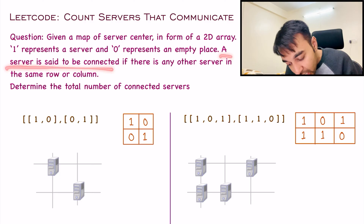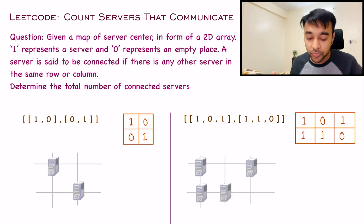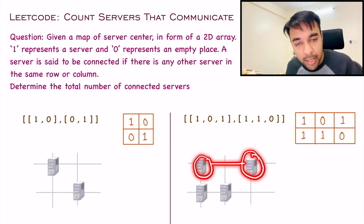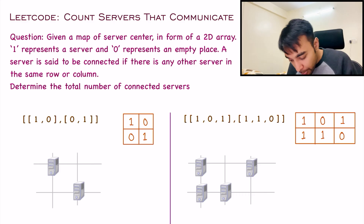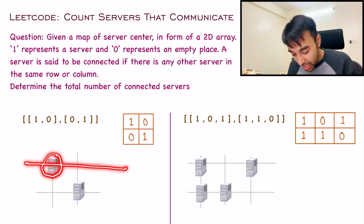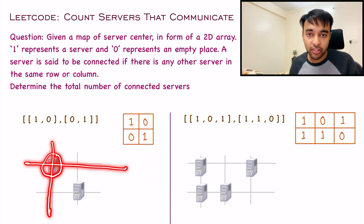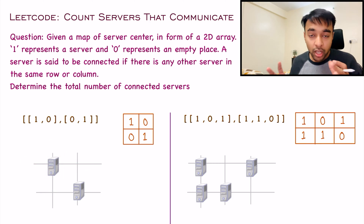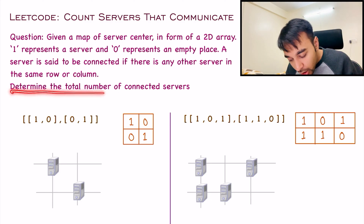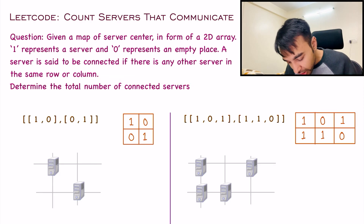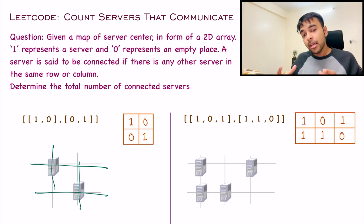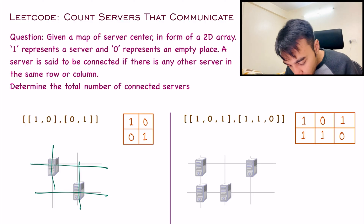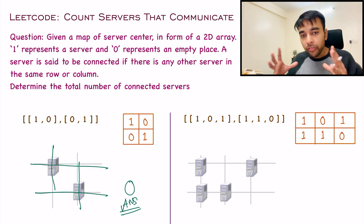Now you can move ahead with the rest of the problem statement. A server is said to be connected if there is any other server in the same row or the same column. You can see that this server has one more server in the same row, and this server also has one more server in the same column, so this server is said to be connected. But in the first test case, you have this server — if you look at its row, you cannot find any other server, and if you look at its column, you once again cannot find any other server. So you will say that this server is not connected. Given such a server center, you have to tell me the total number of connected servers. For our test case number 1, the first server is not connected and neither is the second, so 0 will be your answer.